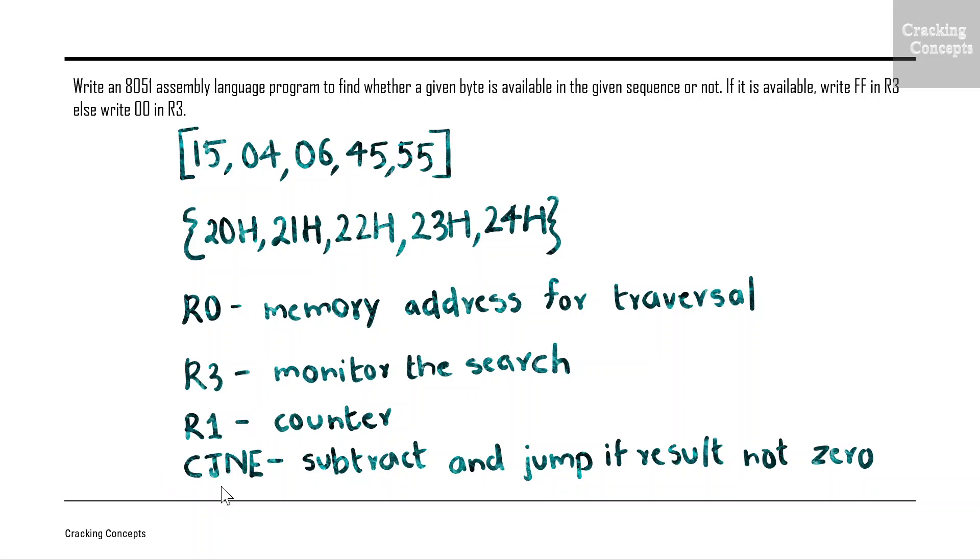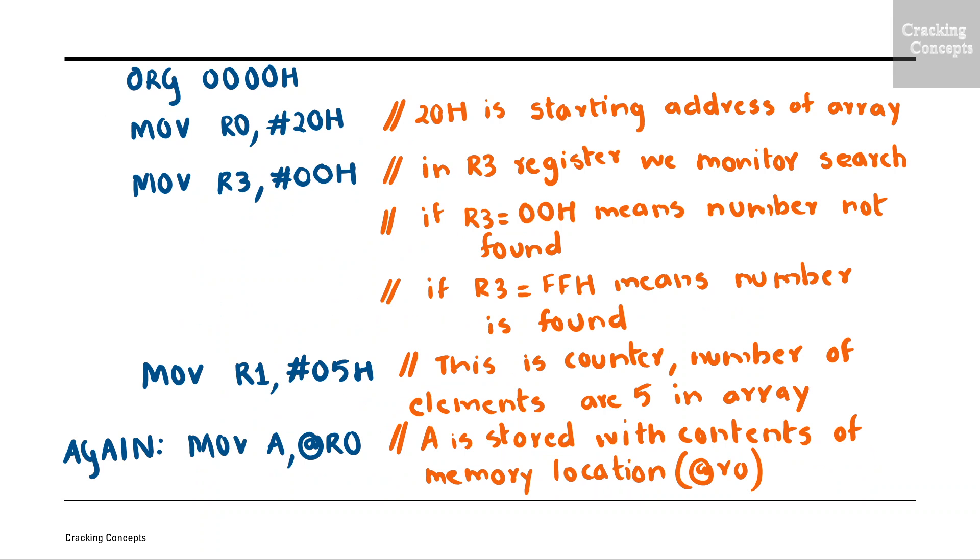We will also use a jump instruction CJNE which stands for compare and jump when not equal, which will perform a subtraction between the two operands and jump if the result is not zero. Let us start writing the program.